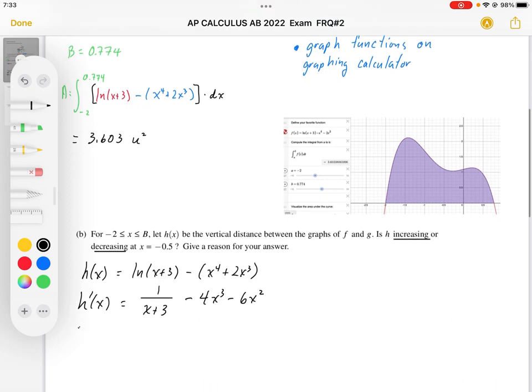And then we're going to evaluate this derivative at negative 0.5. So when we plug in negative 0.5, I'm going to get 2.5. This is going to work out to be 1 half.